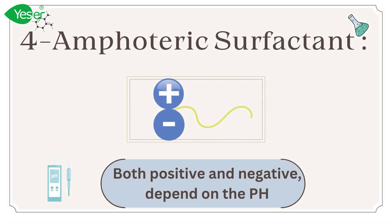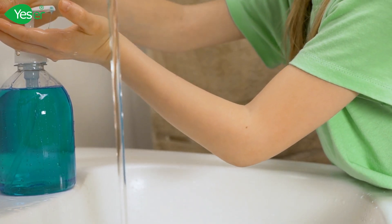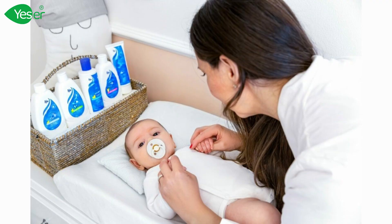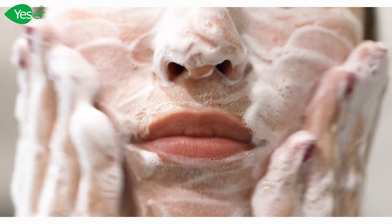Amphoteric surfactants have both positive and negative charge depending on the pH of the solution — they can act as anionic or cationic surfactants depending on pH. They are mild and less irritating, making them suitable for use in baby products, shampoos, and facial cleansers. They also have good foaming properties and are often used to stabilize foam.